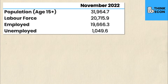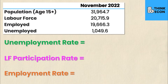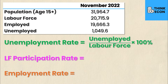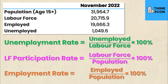The three rates we're calculating today are the unemployment rate, the labour force participation rate, and the employment rate — the three rates expected in an introductory macroeconomics course. The unemployment rate equals the number of people unemployed divided by the number of people in the labour force, times 100. The labour force participation rate equals the number of people in the labour force divided by the total working age population, times 100. The employment rate is the number of people employed divided by the working age population, times 100.